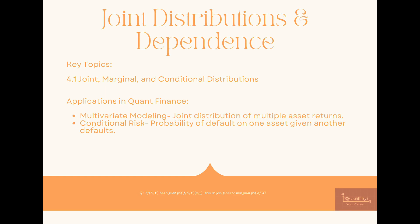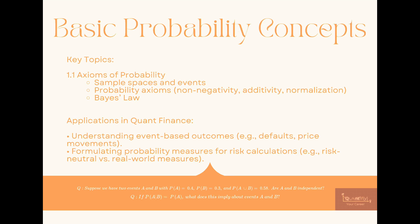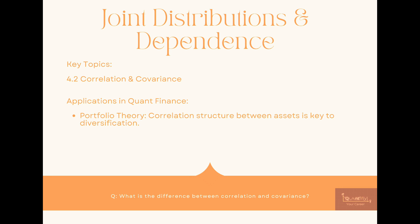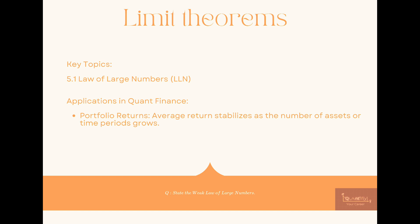In the real world you may require multivariate and joint normal distributions — for example, to model multiple asset returns. For this you will need joint, marginal, and conditional distributions. The basis for conditional distributions is Bayes' law, which we saw in the basic probability concepts. Correlation and covariance are of course important in portfolio theory.